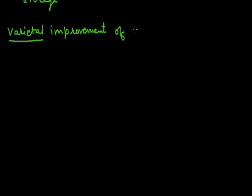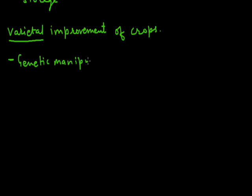We have certain methods through which we can improve the variety of crops. The first important method is genetic manipulation. Genetic manipulation is the technique in which we manipulate the genes and increase the quality and quantity of variety. New techniques are available, one of them being recombinant DNA technology, used for the improvement of crop variety.